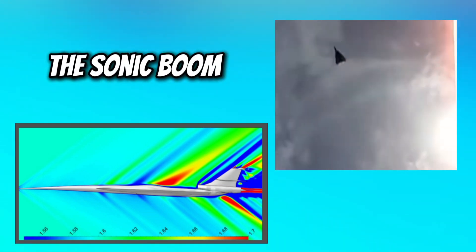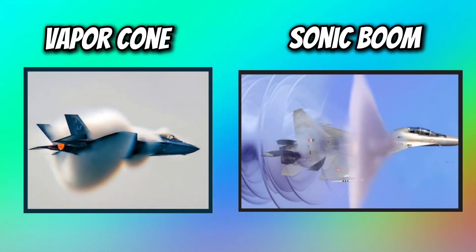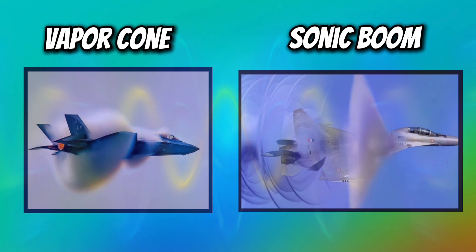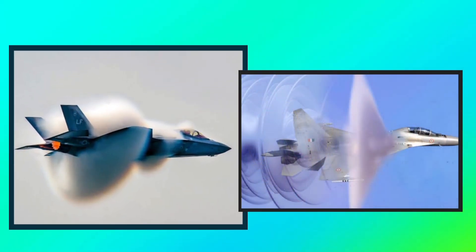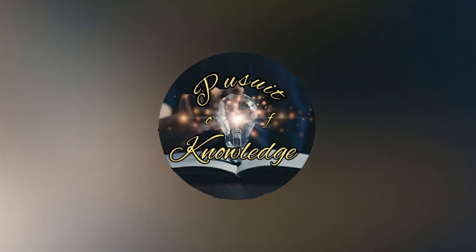When the aircraft fully surpasses the speed of sound, it creates a sonic boom, a loud and powerful shock wave. The vapor cone and sonic boom are related phenomena, both resulting from the interaction of the aircraft with the speed of sound, but the vapor cone is the visual effect, while the sonic boom is the auditory result. Thank you for watching and joining me on this pursuit of knowledge.